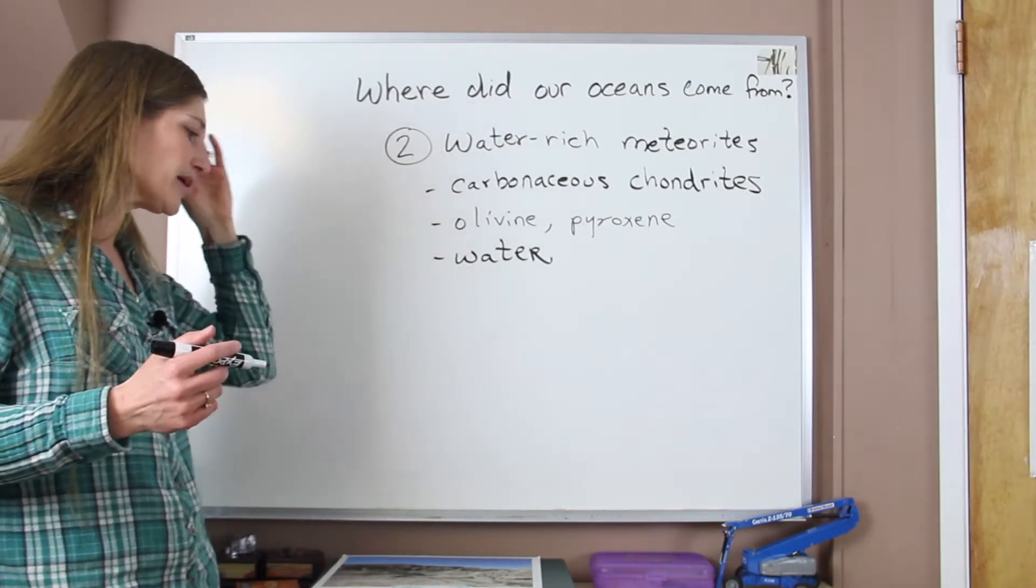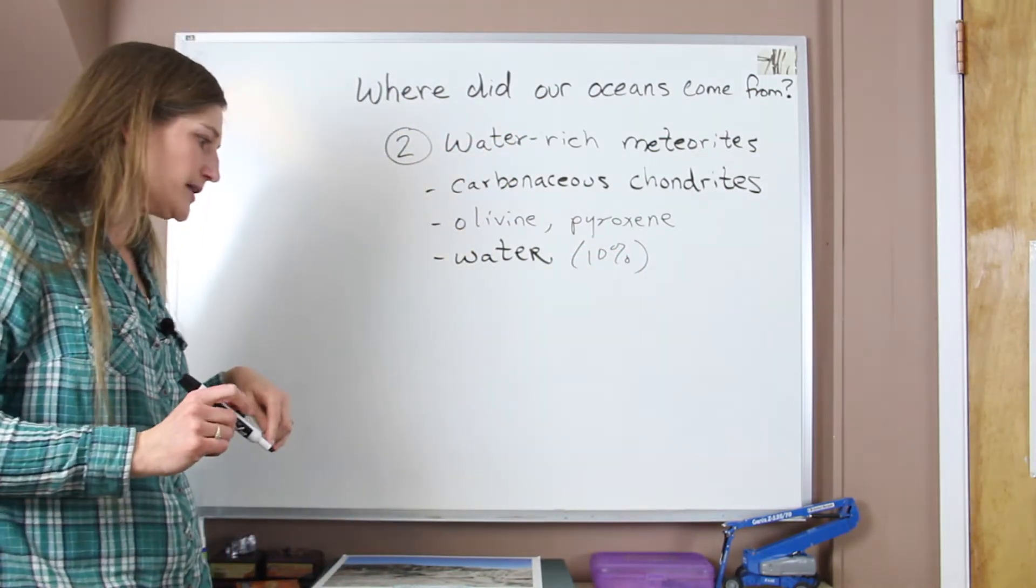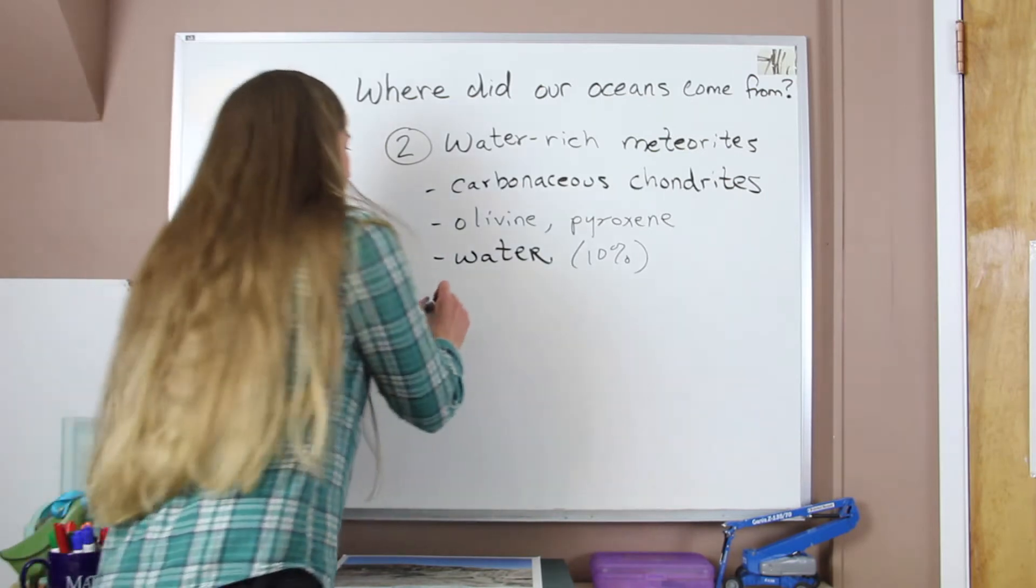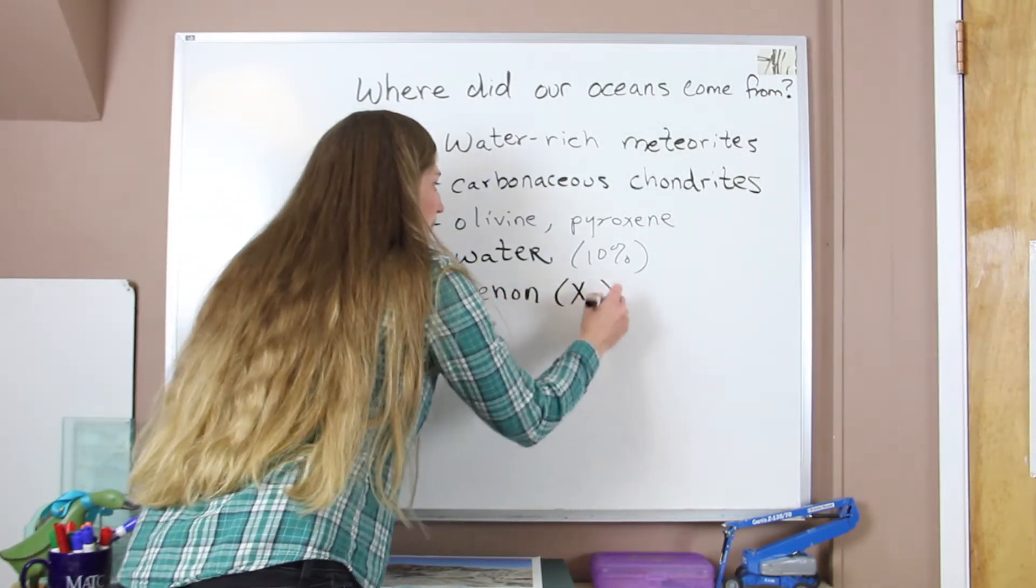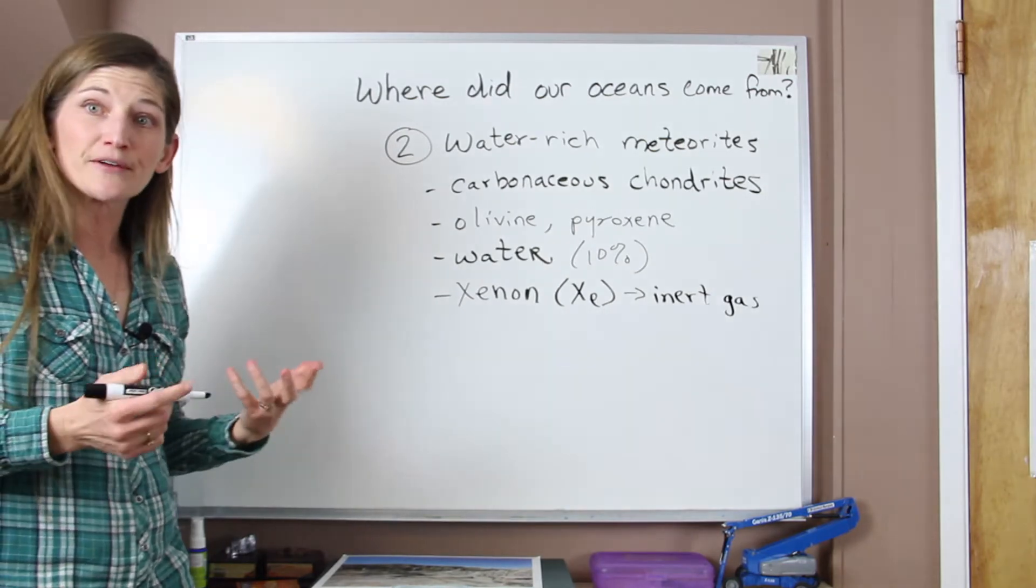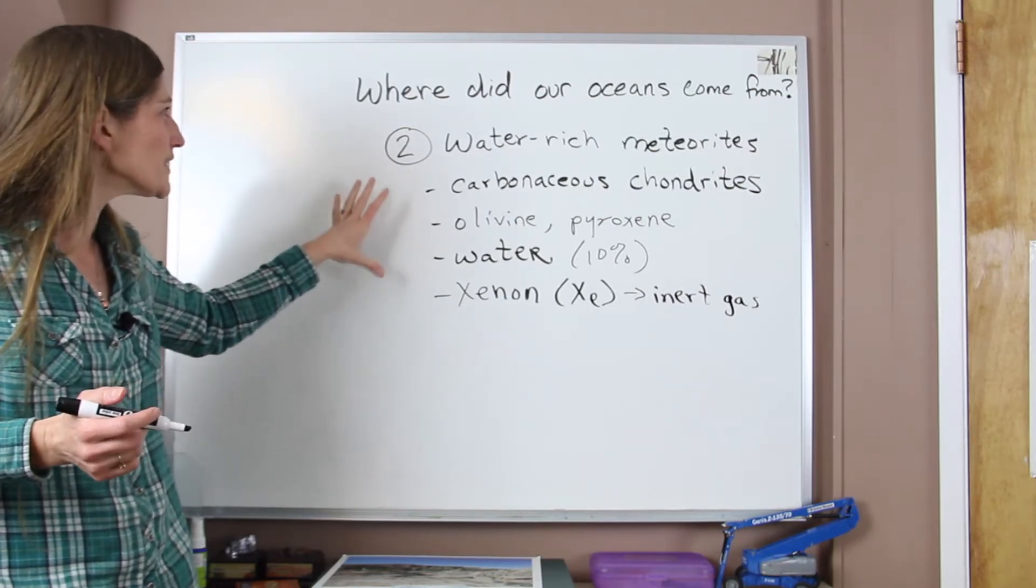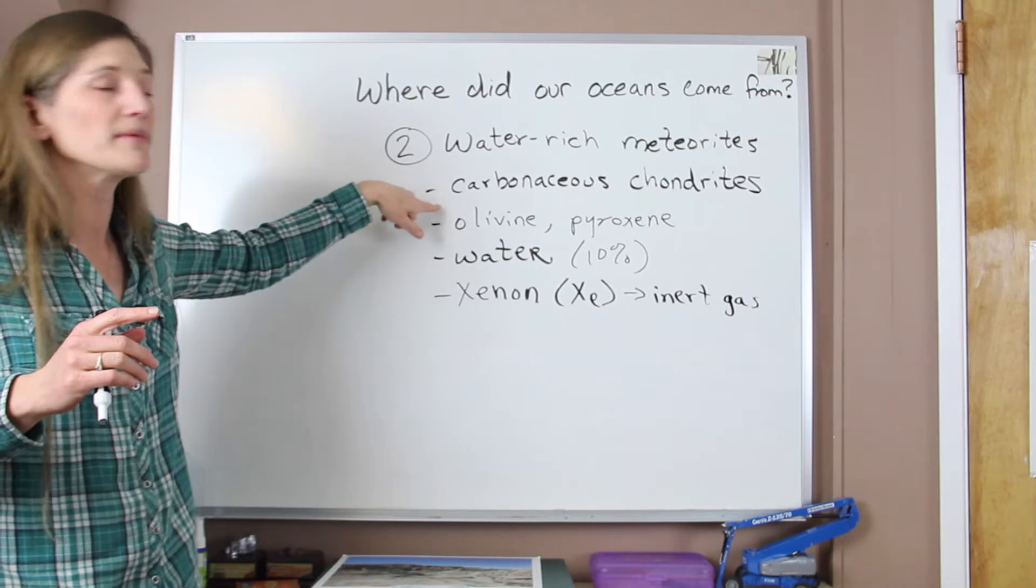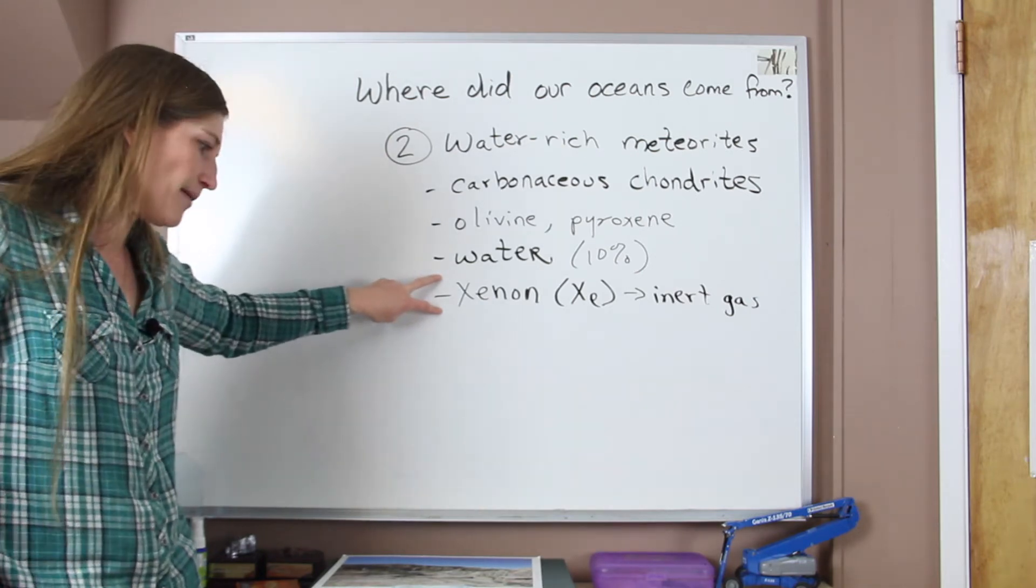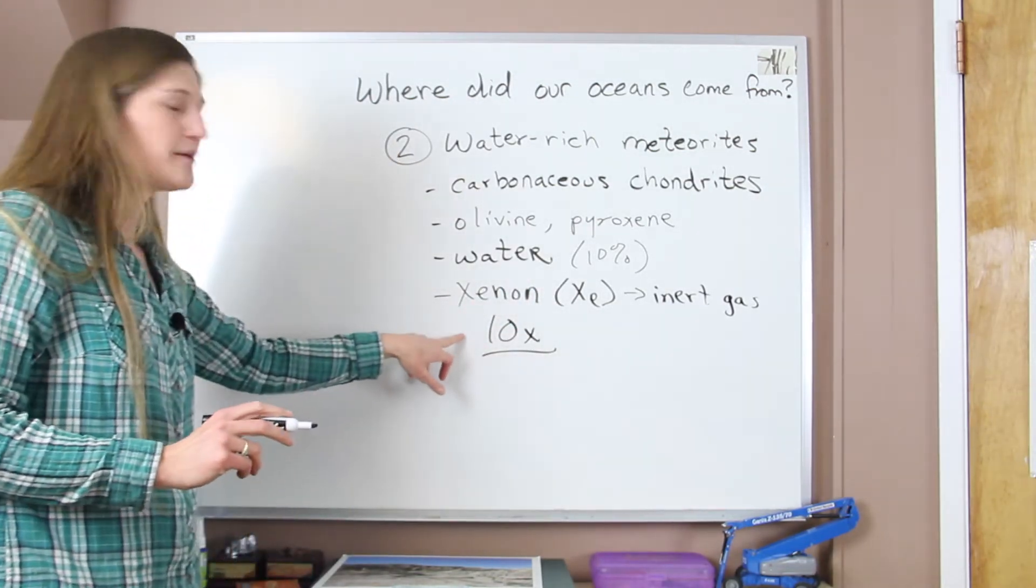Now what's really interesting when we go and look at this, the water in these meteorites is about 10 percent of the total volume of these meteorites. They do have a lot of inert gases that are present, so including xenon gas. This is an inert gas. We do have xenon in our atmosphere today, but at trace amounts. If we were to try to understand the origination of our oceans, if all of the water came only from these carbonaceous chondrites, then we would see a lot more of our inert gases, these trace gases, in our atmosphere. So we'd probably see on the order of like 10 times the amount that we have today, which we don't.